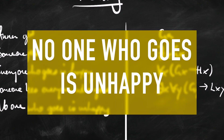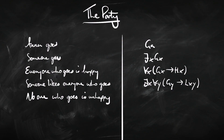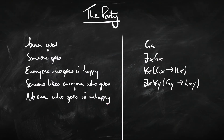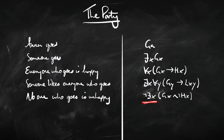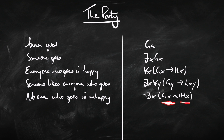'No one who goes is unhappy.' We don't have a separate quantifier for 'no one' — we understand it as the combination of negation and the existential quantifier. The existential says 'some X'; negating it says 'there isn't some X.' So 'no one' is captured as 'there is not someone': there isn't someone who both goes to the party and is unhappy — where 'unhappy' is understood as the negation of happy.